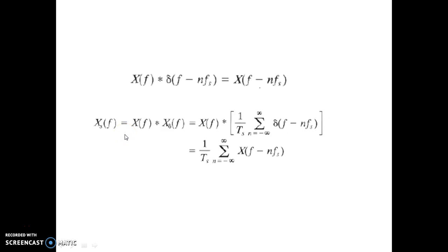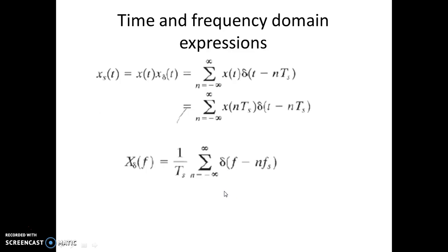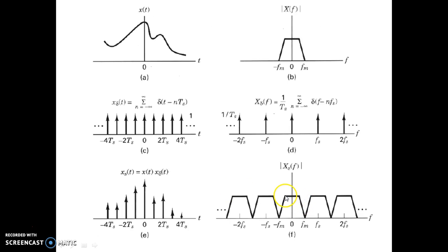Observe this. Now remember this: (1/Ts) x(f - nfs). So it is x(f) replicated at each instant after a distance of nfs. All right, as n takes on values 1, 2, 3, etc., x(f) is being replicated at each frequency point spaced by this value nfs.